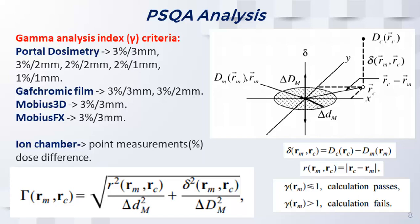Typically in the literature, we use around 3% dose difference and 3mm distance-to-agreement, which is pretty common. We used that for all the different measurement methods, but for portal dosimetry we were curious and also went down to 1% / 1mm just out of curiosity. For the ion chamber, we didn't use a gamma analysis method since it's a point dose measurement — it's simply a percent difference.